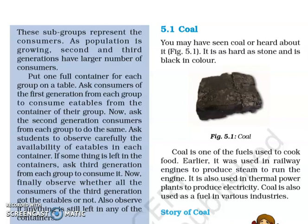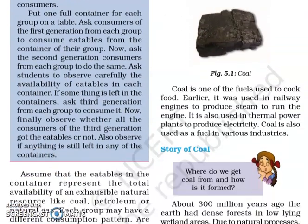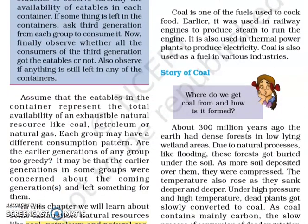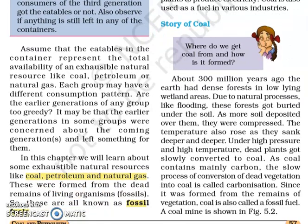Coal — you may have seen coal or heard about it. It is as hard as stone and is black in colour. Coal is one of the fuels used to cook food earlier. It was used in railway engines to produce steam to run the engine. It is also used in thermal power plants to produce electricity, and as a fuel in various industries. Without coal, industries cannot run, and power generation cannot be possible. So this is an extremely important exhaustible natural resource. Now the story of coal — how and where do we get coal, and how it is formed.